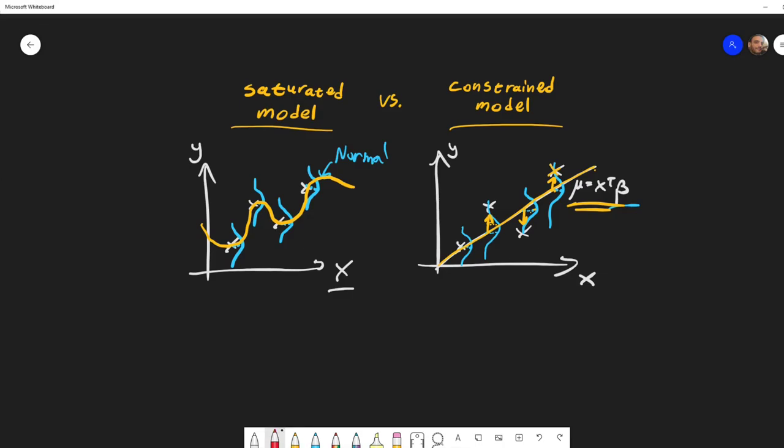And actually, the difference between this likelihood over here, and the likelihood over here, so this point, it has likelihood under the saturated model, which is the highest possible likelihood that it can have, at least for the normal case.